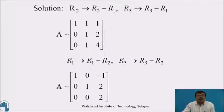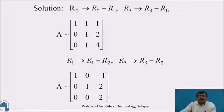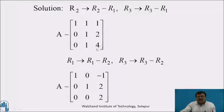By using the transformations R2 = R2 − R1 and R3 = R3 − R1, the matrix becomes [1, 1, 1; 0, 1, 2; 0, 0, 4]. This is the first step.